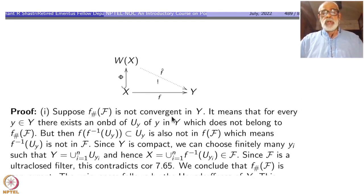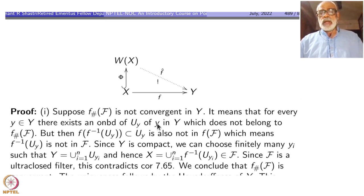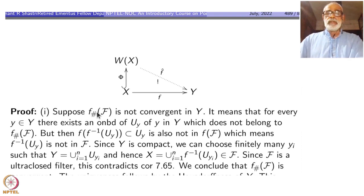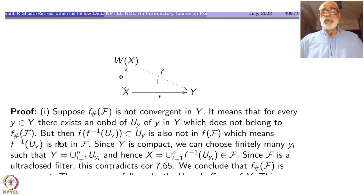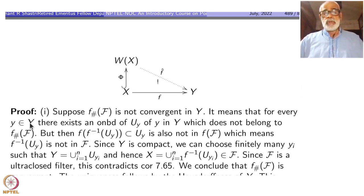Suppose f-check of F is not convergent in y. That means for every y inside y, there exists an open neighborhood U of y in y which does not belong to f-check of F. Any filter that does not converge means you have such neighborhoods — for every point it does not converge, you must have a neighborhood which is not in the filter. This is what we have seen earlier.